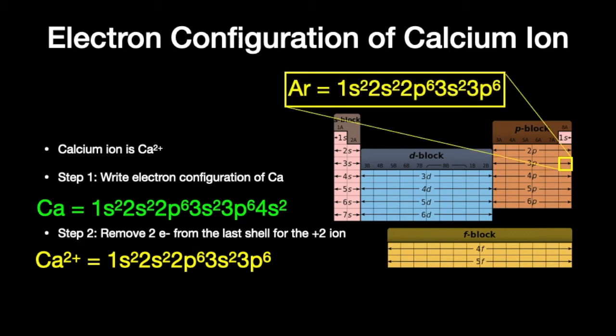So calcium ion, or calcium 2+, is isoelectronic with argon — and that's why it forms a plus 2 ionic charge to become exactly like argon. Things with filled shells tend to be more stable.